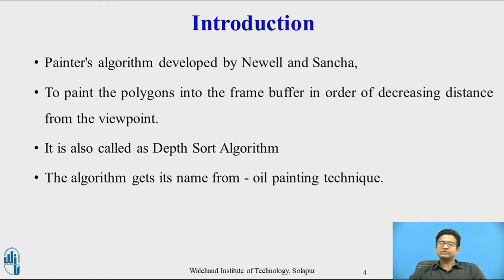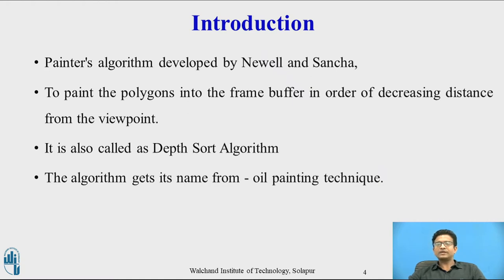The artist then adds the most distant object, then the nearer object, and so on. There is no need to erase the portion of background. The artist simply paints on top, and the new paint covers the old so that the newest layer of paint is visible.